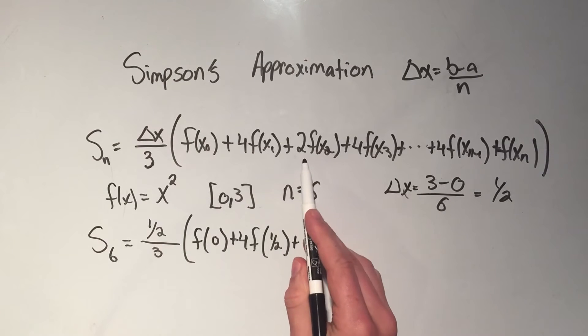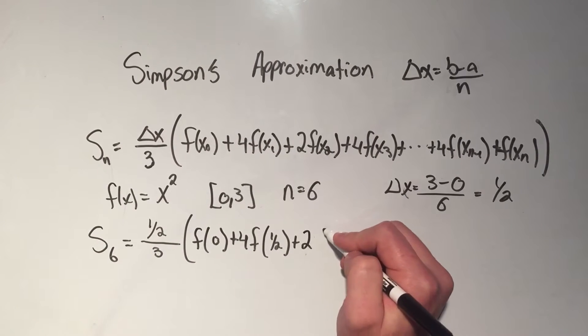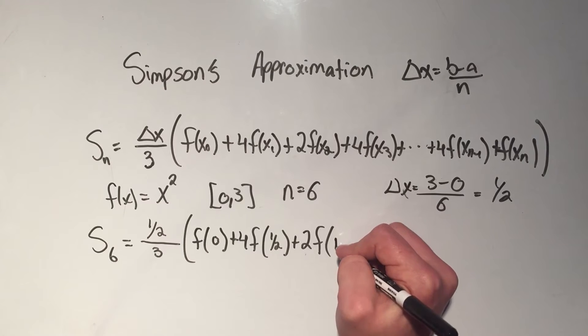And then I need to do 2, so it goes from 4 to 2, 2 times f of x2. How do I get from x1 to x2? I add delta x. So 1 half plus 1 half is 1.